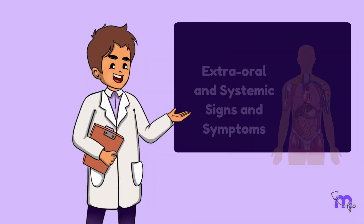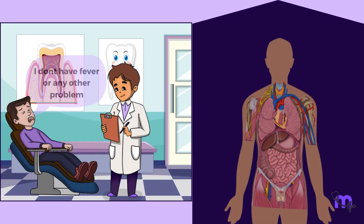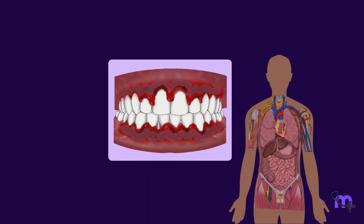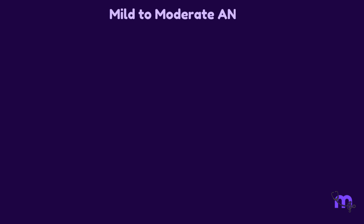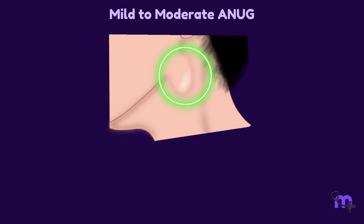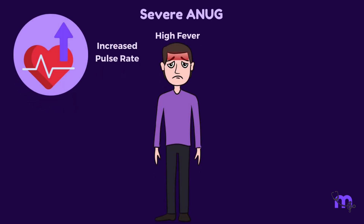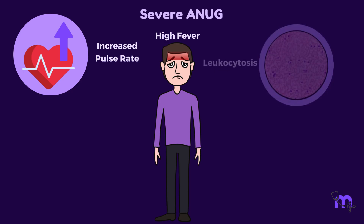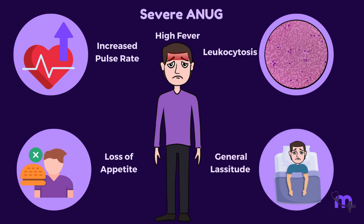Let's discuss the extraoral and systemic signs and symptoms. While my patient had no other systemic illnesses, it is common for ANUG to show some systemic signs depending on the stage of the disease. In cases of mild to moderate ANUG, there could be local lymphadenopathy and a slight elevation in temperature. In cases of severe ANUG, high fever, increased pulse rate, leukocytosis, loss of appetite, and general lassitude are noted.